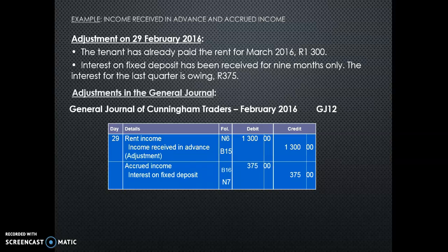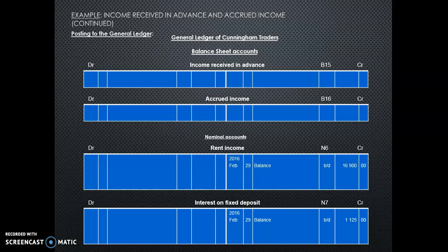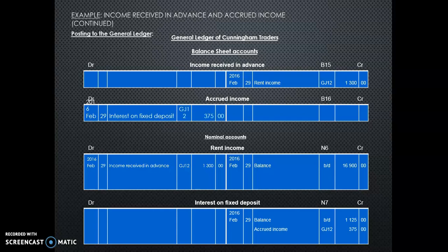For the accrued income adjustment, the easiest way to think about this: the interest on fixed deposit is the income that I have earned but not received, so it goes on the credit side. Then accrued income is an asset — XY Bank owes me that 375. Now going to the general ledger, the balances are on the credit side because they are both incomes. Rent income decreases on the debit side, and the contra account is income received in advance, which is a liability. Interest on fixed deposit must increase on the credit side by the 375 owed to me. So accrued income goes to the debit side — 375 — that is an asset.